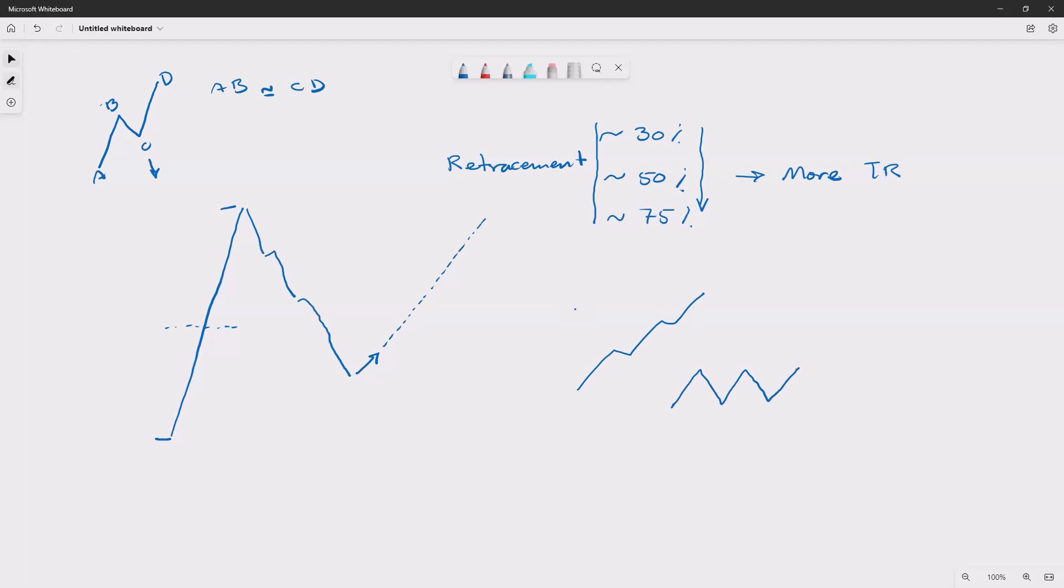And it depends on the percentage of the pullback. The deeper it goes to pullback, the higher the probability that it will have more of that trading range tendencies. That's what you will usually see.